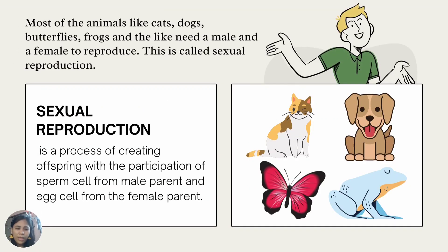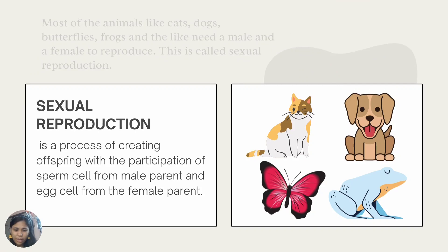Most animals like cats, dogs, butterflies, frogs, and the like need a male and female to reproduce. This is called sexual reproduction. Sexual reproduction is a process of creating offspring with the participation of sperm cells from the male parent and egg cells from the female parent.